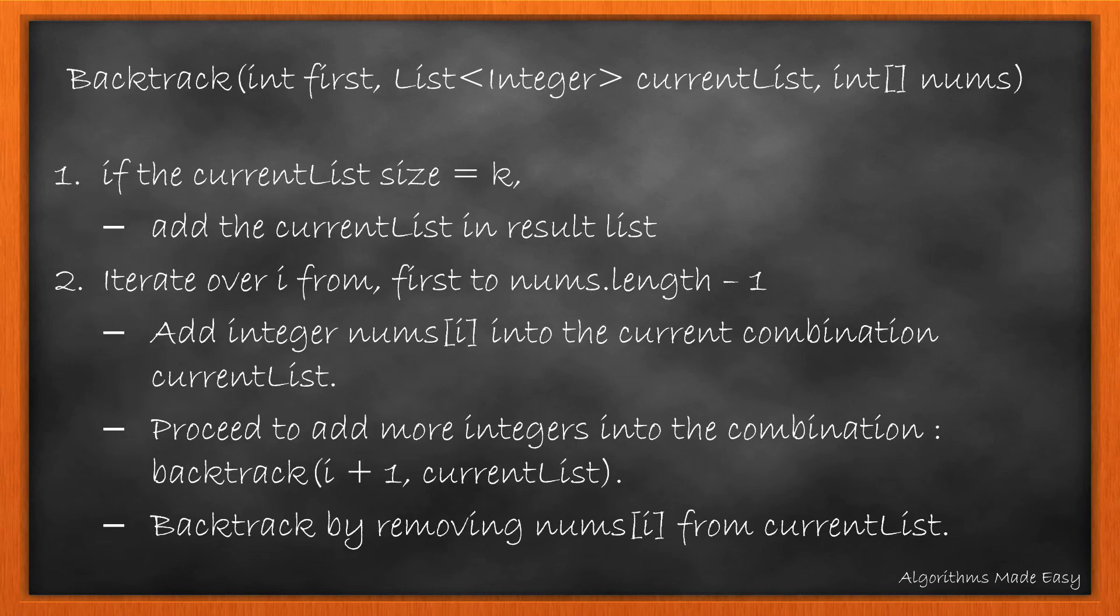The backtrack method takes an integer, say first, to mark the starting point, a list to store the subset current list, and the input array nums. We first check if the current list size is equal to the length we are calculating for. This means that we have got a subset of length k.